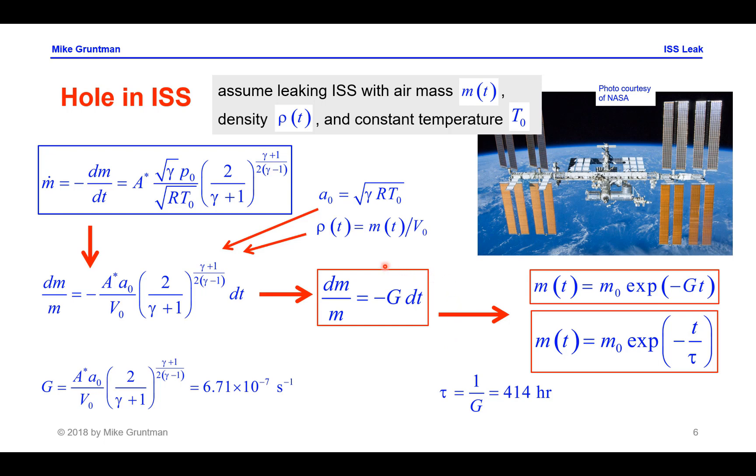This very simple differential equation gives us the solution where the mass of the air inside the station as a function of time equals M naught, the initial air mass times exponential minus Gt. Or if I replace G by its inverse, basically the characteristic time for air to leak through a hole in the station, then this equation for the time dependent mass of air in the station can be expressed as M naught times exponential minus time divided by the characteristic time. The characteristic time tau is about 400 hours.